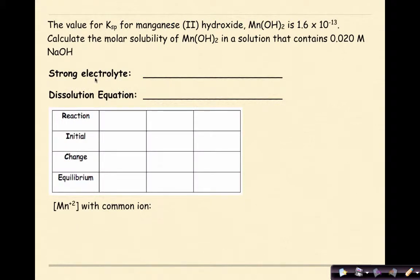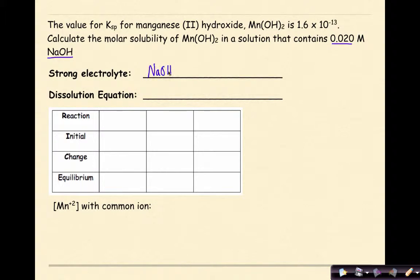Let's look at an example of how a common ion can affect solubility. The Ksp value for manganese 2-hydroxide, Mn(OH)₂, is 1.6 times 10 to the negative 13. Calculate the molar solubility of Mn(OH)₂ in a solution that contains 0.02 molar NaOH. Our strong electrolyte in this solution is our strong base, NaOH. Writing the dissociation: NaOH → Na⁺ + OH⁻, using a single arrow because it dissociates completely.